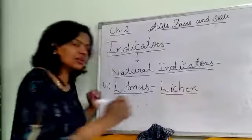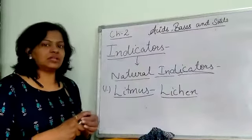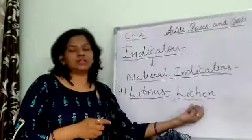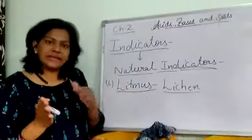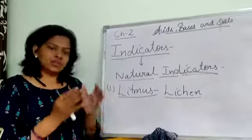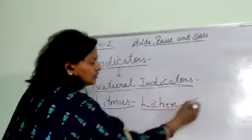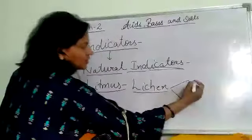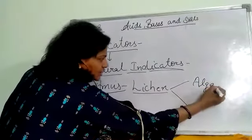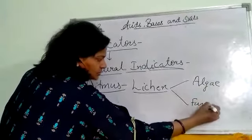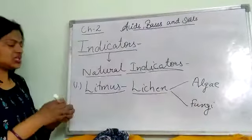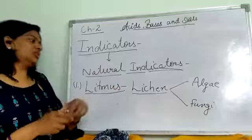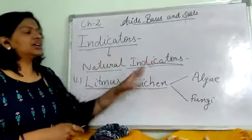Lichen — in Class 7 we studied autotrophic and heterotrophic modes of nutrition. Lichen is basically a symbiotic relationship between an algae and a fungus. It is called symbiotic because they benefit each other.